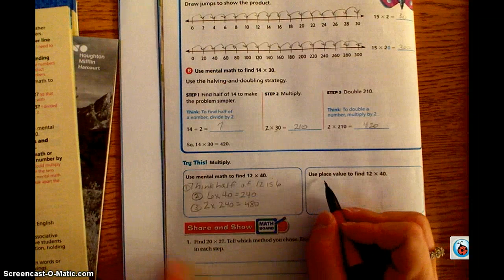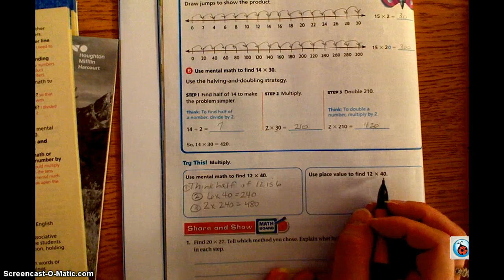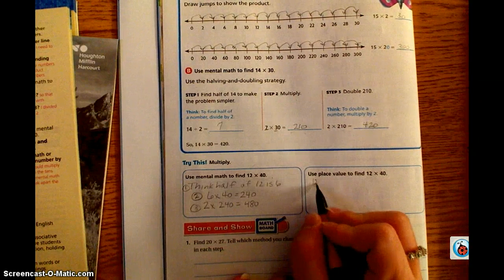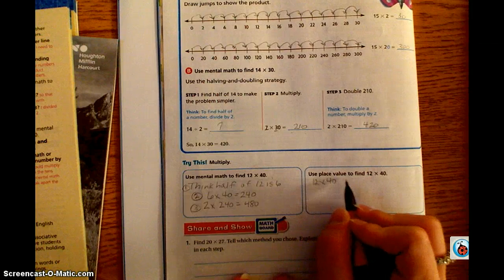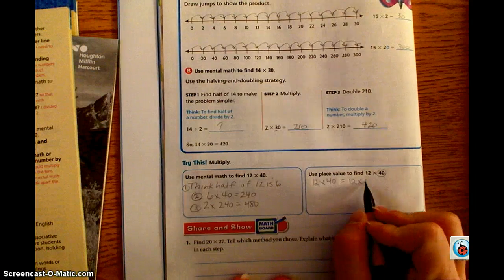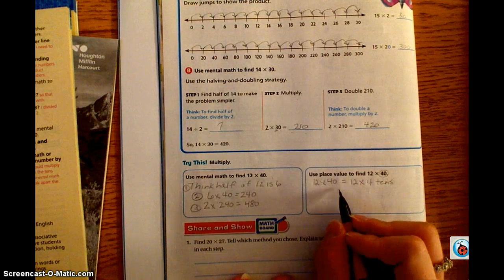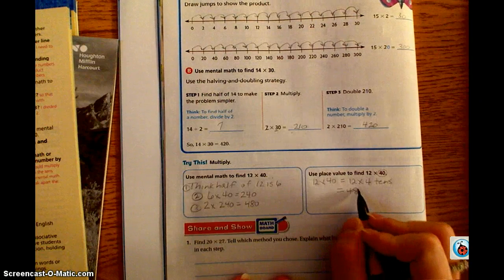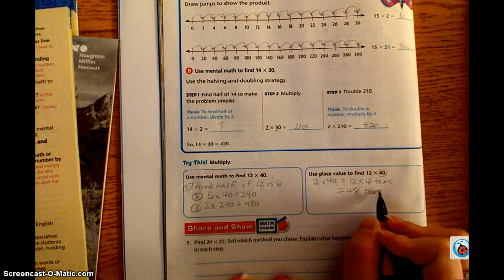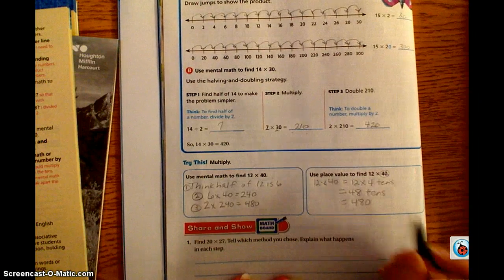Same thing here, except they want you to use the place value to find 12 times 40. So 12 times 40 equals 12 times, and we know that 40 becomes 4 tens. So that's going to equal 48 tens or 480.